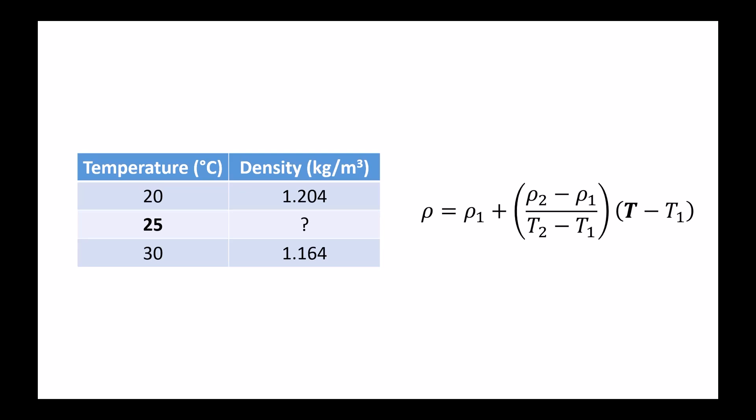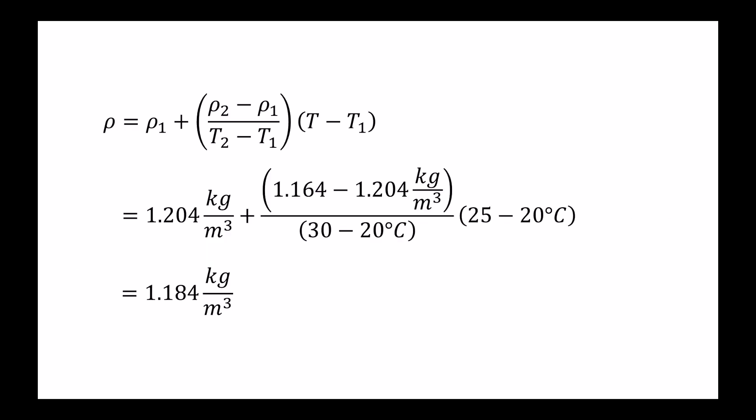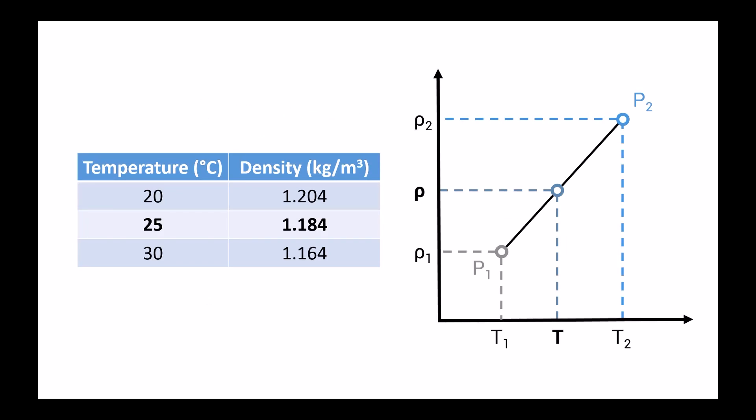So next, we're going to plug in these values into our interpolation formula. And when we substitute these values in, we can solve for the density and we find that it equals 1.184 kilograms per meter cubed. Now when we plug this value into our table, you'll note that this seems correct because the density does lie somewhere between 1.2 at 20 degrees Celsius and 1.16 at 30. So this seems correct and probably means that we've performed the interpolation correctly.